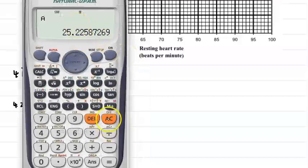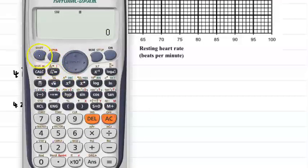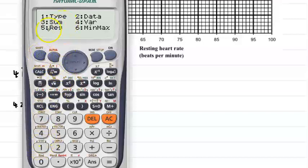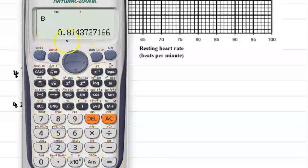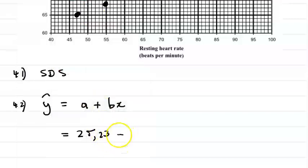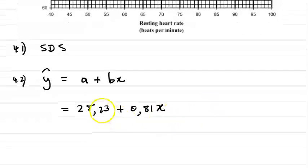Let's get our b value. So we press AC shift and one regression. Let's get our b value, so that's option two. That's 0.814, so round to two decimal places it's going to be 0.81. Plus 0.81x. So there's your regression line. Therefore y is equal to 25.23 plus 0.81x.